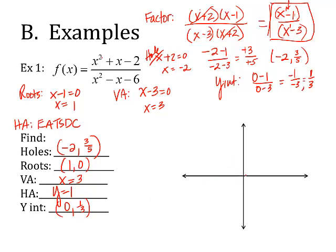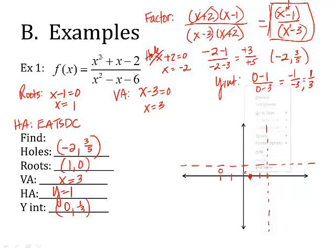So I start to graph this step — asymptotes first. I have a vertical asymptote where x is 3, and I drop that in. Horizontal asymptote where y is 1. I have a hole at negative 2 and 3 fifths — that's just below the asymptote at y equals 1. I have a root at 1, 0. And I have a y-intercept at 0 and 1 third, so that's just above the axis. Looking at your points, you can see there's a curve connecting all of this.